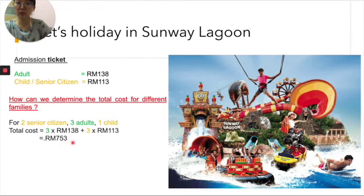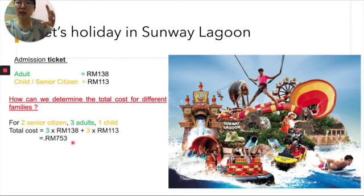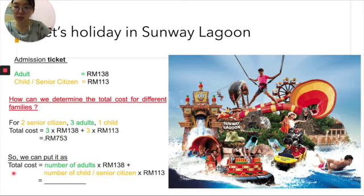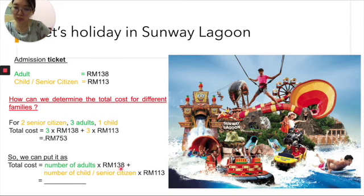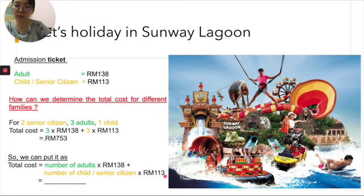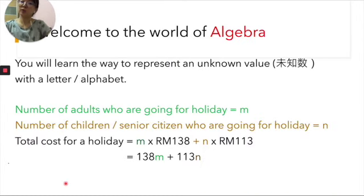But this is only for my family. Can I create a formula that each and every family can use in common? We can put it as: total cost equals the number of adults multiplied by the ticket price for adults, plus the number of children or senior citizens going, multiplied by the ticket price for them. So welcome to the world of algebra. I'm going to show you how algebra plays a role in our holiday to Sunway Lagoon.